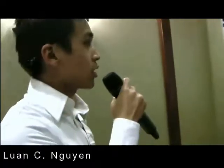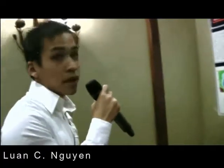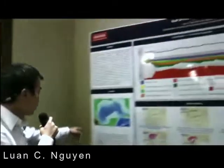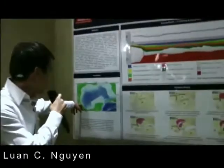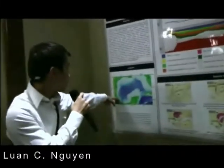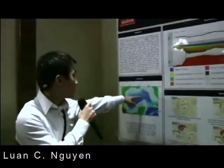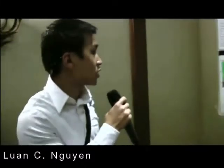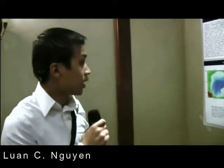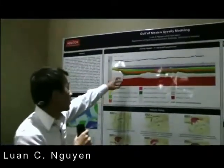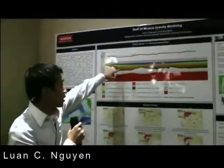We made a transect across the Gulf of Mexico, and this is the location of my line. It runs from southwest to northeast, roughly parallel to the strike of the basin. My result is a gravity model that shows the thickness of different sedimentary layers.